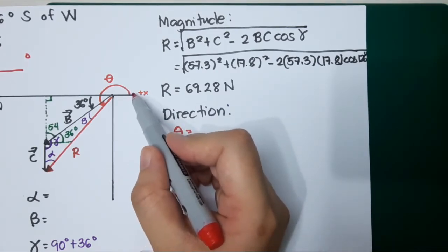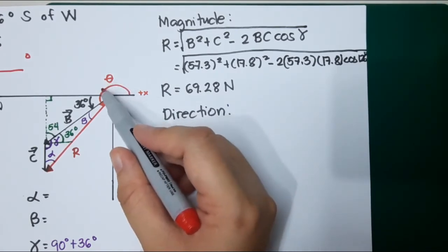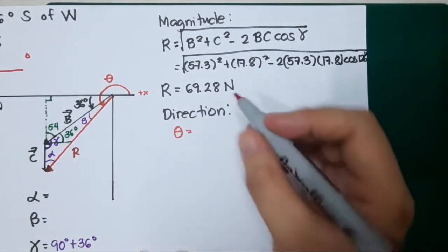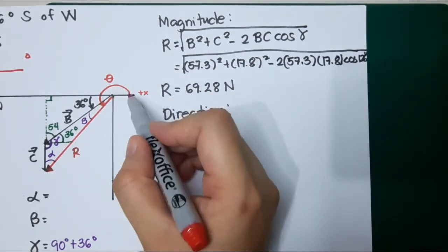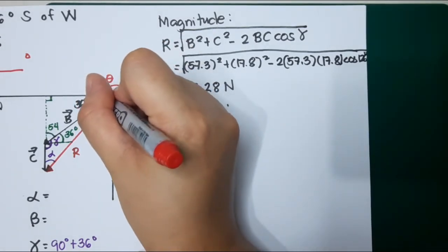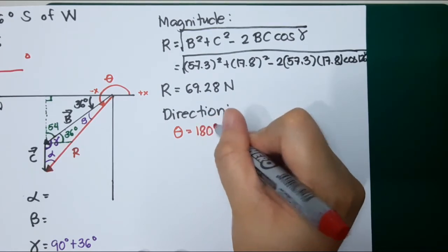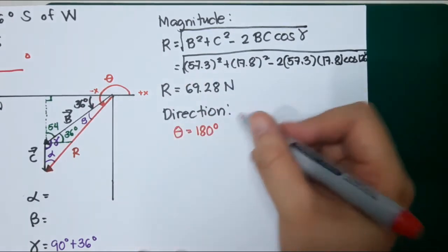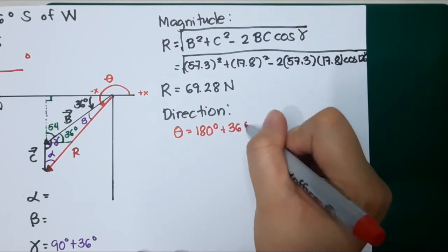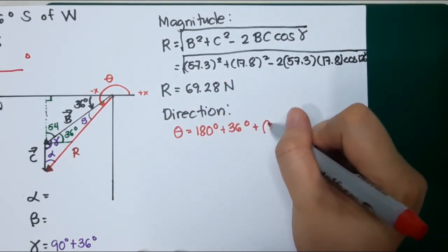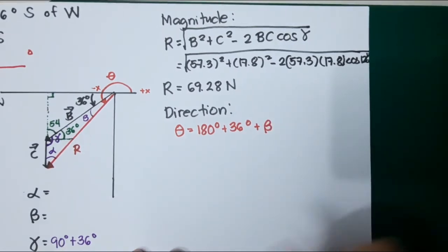Let's proceed now for the direction. For direction I will find theta. If I will solve theta, that is from the angle from the axis, 36 and beta. That will be from positive X to negative X. That is 180 degrees plus this one, 36 plus beta. That is how to solve my angle.